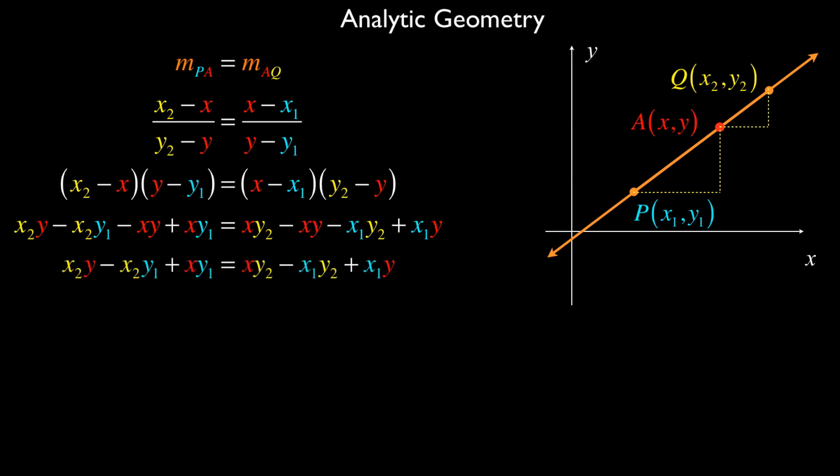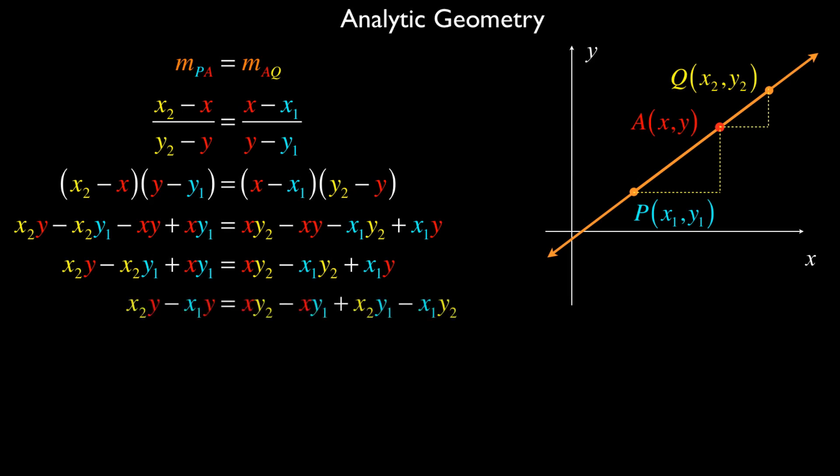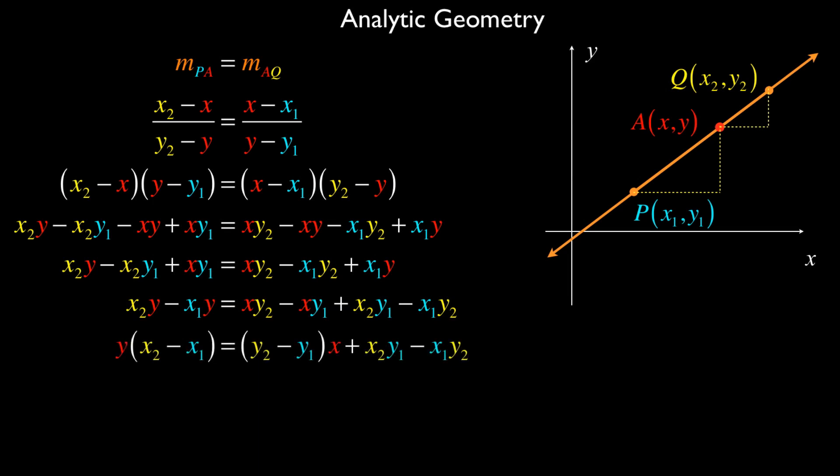And then I gather on one side of the equation all of the red y's, that's the variable point y, and on the other side all of my red x's, the x-coordinate of point A, and all of the leftover stuff, the x2y1 minus x1y2. And now I'm going to do a little bit of common factoring. And so we get, on the left-hand side, y times (x2 minus x1) equals, on the right-hand side, (y2 minus y1)x plus x2y1 minus x1y2.